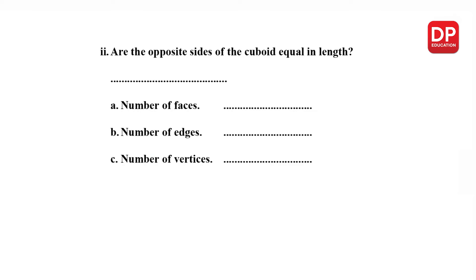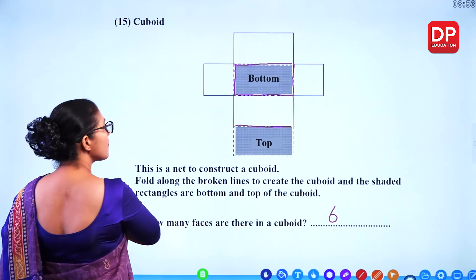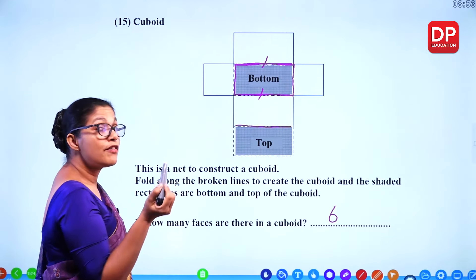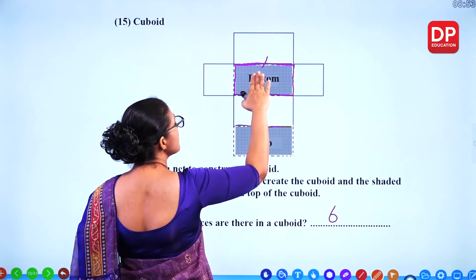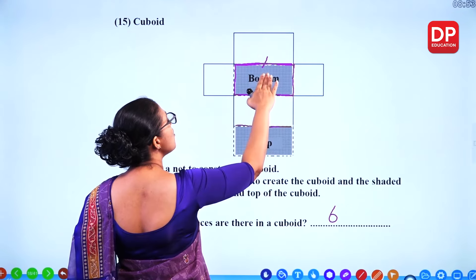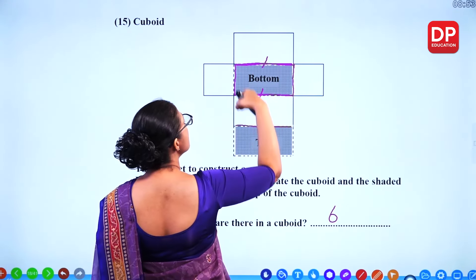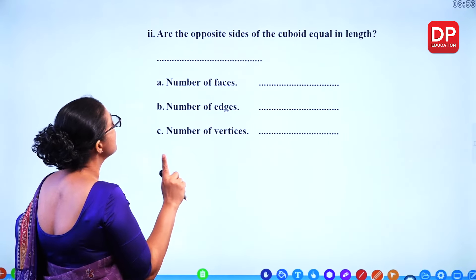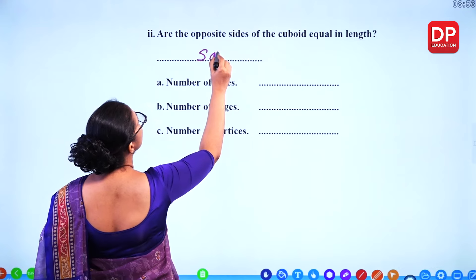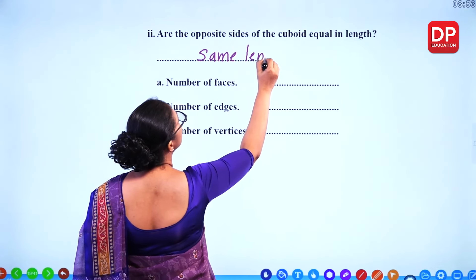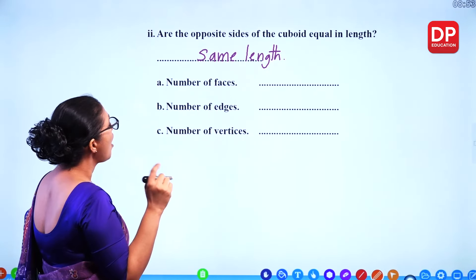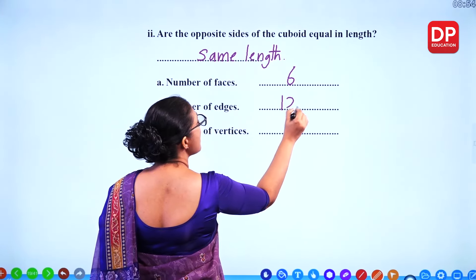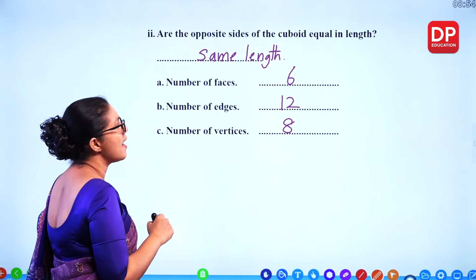In a cuboid, opposite sides are equal in length. The bottom and top are the same rectangle, and each pair of opposite sides matches. So a cuboid has 6 faces, 12 edges, and 8 vertices.